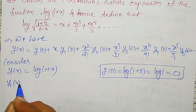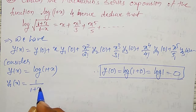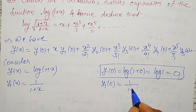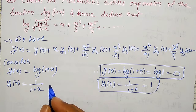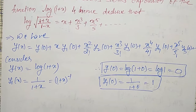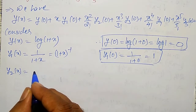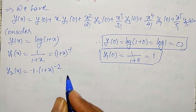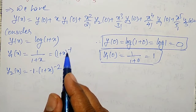Similarly, differentiating y(x), I get y₁(x) = 1/(1 + x). Therefore y₁(0) = 1/(1 + 0) = 1. For the next differentiation, I will write this as (1 + x)⁻¹ to make differentiation easier.